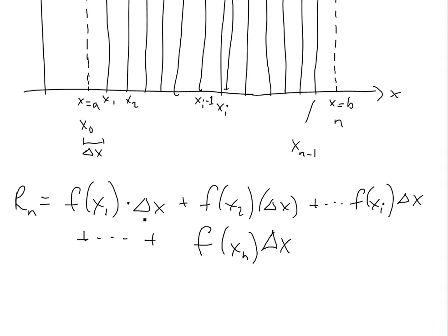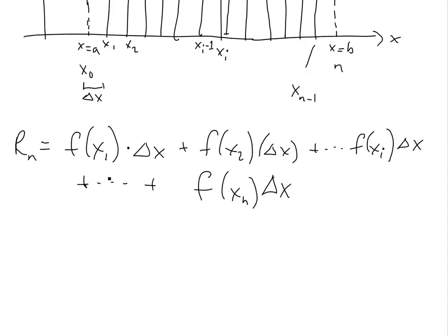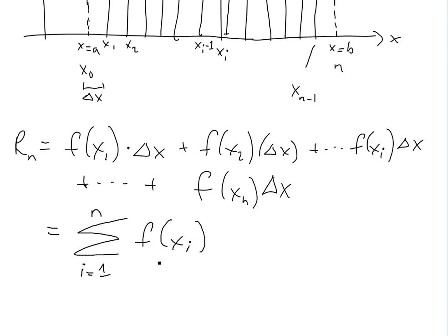You could write this sum in sigma notation — see the video link below on sigma notation. Basically, you could write this as equal to the sigma from i equals 1 up to n of f(xi) times delta x. So if i is 1, you get f(x1) times delta x; if i is 2, you add that one, et cetera. So this is what Rn equals.